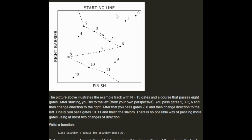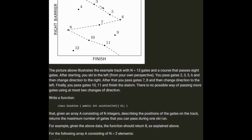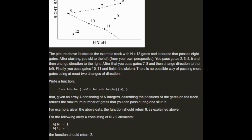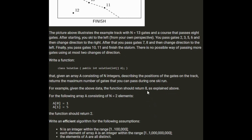Write a function that, given the array, returns the maximum number of gates you can pass during one ski run. For the example data the function should return 8. For the array [1, 5], the function should return 2. Write an efficient algorithm where N, the number of gates, is within the range of 1 to 100,000. Each element of array A is an integer within the range of 1 to 1 billion, and all elements of A are distinct.